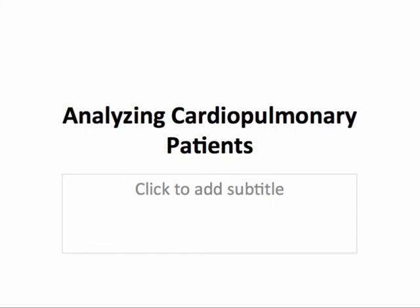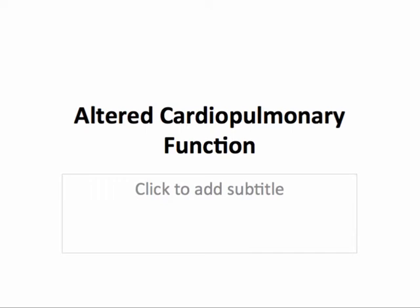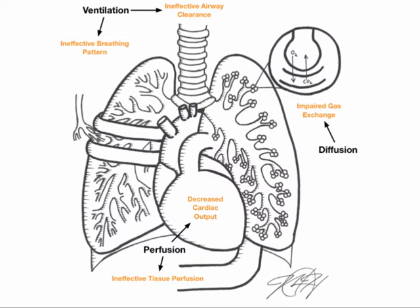A good place to start is always with a good assessment of your patient. Be sure to elicit a history of your patient's usual breathing pattern and assess for any changes. Additionally, explore the patient's history for any factors that may contribute to altered cardiopulmonary function. Here is a visual representation of the three key cardiopulmonary processes and their associated nursing diagnoses. We will explore each of the key processes — ventilation, diffusion, and perfusion — and then go into detail regarding their associated diagnoses and how to manage problems in these areas.